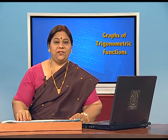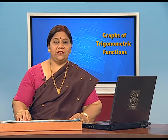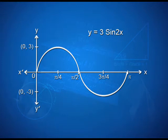Let us take one more example to see how we can sketch the graph of the function y = 3 sine 2x. To obtain this graph, we first draw the graph of y = sin x in the interval 0 to 2 pi, and then divide the x-coordinates of the points where it crosses the x-axis by 2. This is how we draw the graph of y = 3 sine 2x.